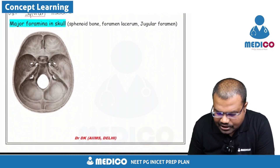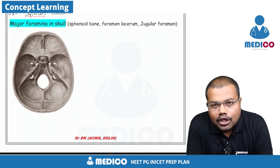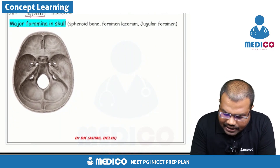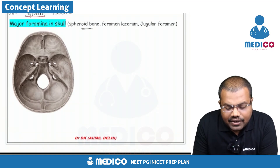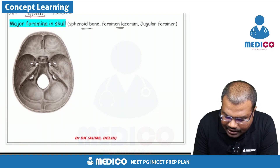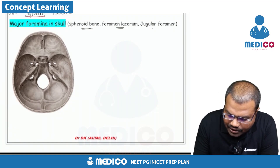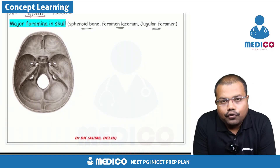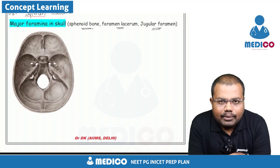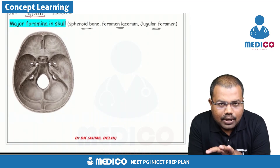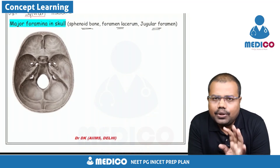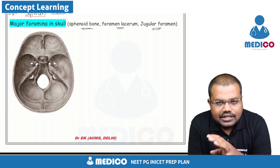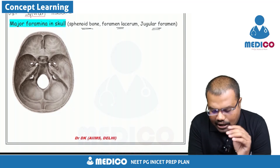We will discuss the major foramina present in the skull, covering three parts: the sphenoid bone foramina, the foramen lacerum, and the jugular foramen. These three parts of the foramina are regularly asked about, so we are discussing all three.